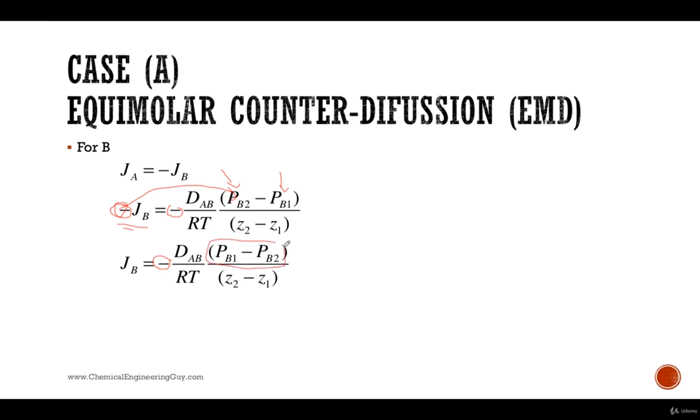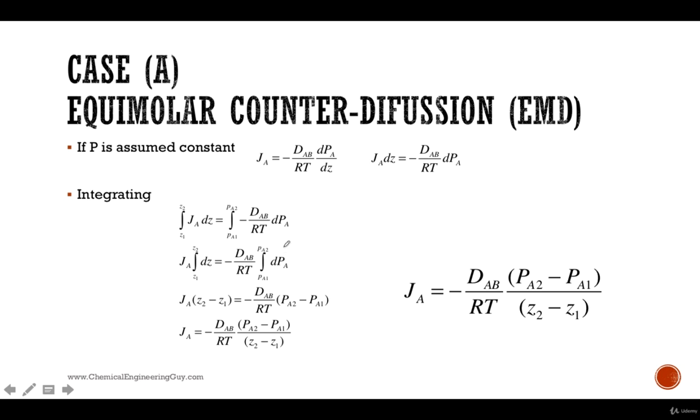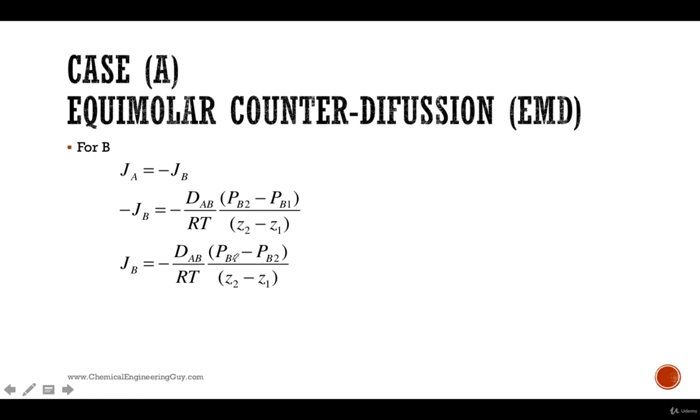Now, you can see this is the only thing that changes is that the pressures are 2 minus 1. And of course, we're talking about A. And this is 1 minus 2. And this is talking about B. Just keep that in mind. So this is equimolar counter diffusion. Let's check out an example in order to see how easy it is whenever we have the diffusivity, ideal gas constant is always given, temperature is given. So this is of interest.